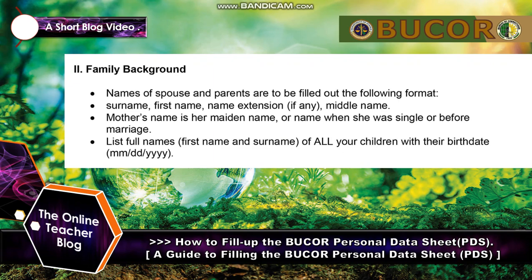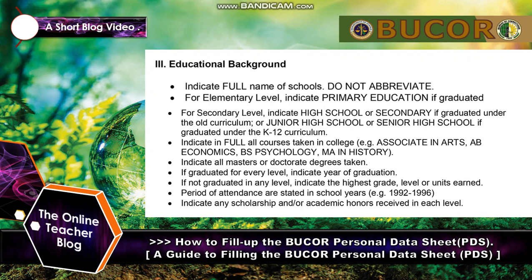Section 3 — Educational Background: indicate the full name of schools — do not abbreviate. For elementary level, indicate 'Primary Education' if graduated. For secondary level, indicate 'High School' or 'Secondary' if graduated under the old curriculum, or 'Junior High School' or 'Senior High School' if graduated under the K-12 curriculum. Indicate in full the courses taken in college — for example: Associate in Arts, AB Economics, BS Psychology.